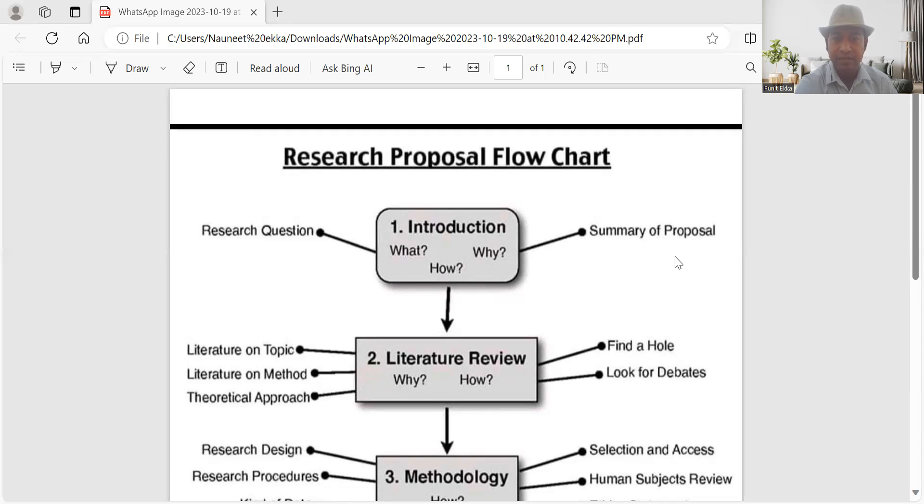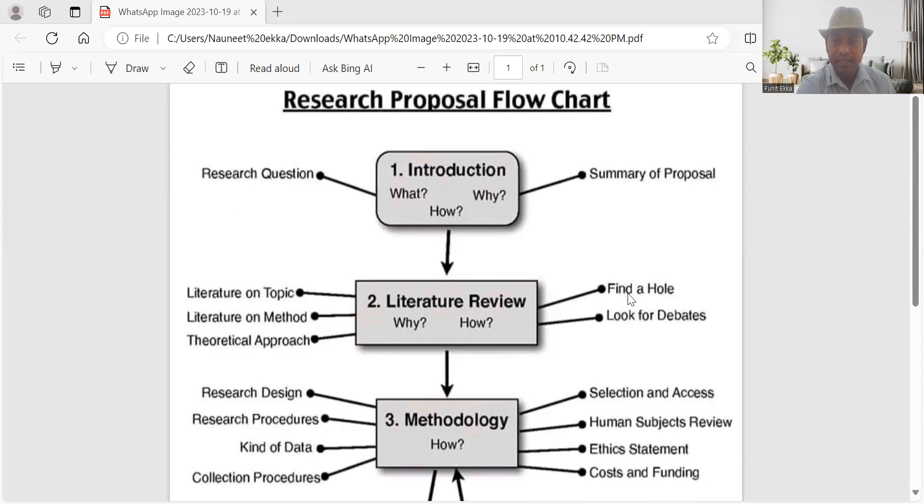Then literature review. What has already been done, which kind of research work has already been taken care of, and what previous authors, researchers, scholars are talking about. Here we need to find the gap. It says find a hole, which means what are the gaps in the existing literature. Literature review says we need to find the gap.